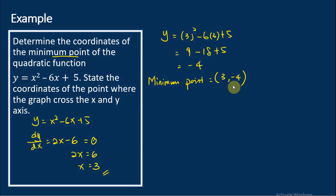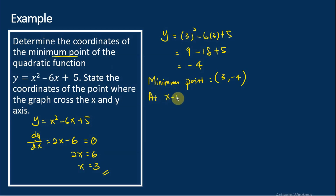We are going to use our calculator to verify this answer later. Now, the question also asked us to state the coordinates of the point where the graph crosses the x and y axes, which means they want us to find the x-intercept and y-intercept. At the x-intercept, y = 0.